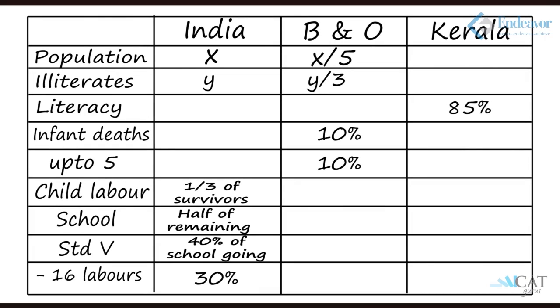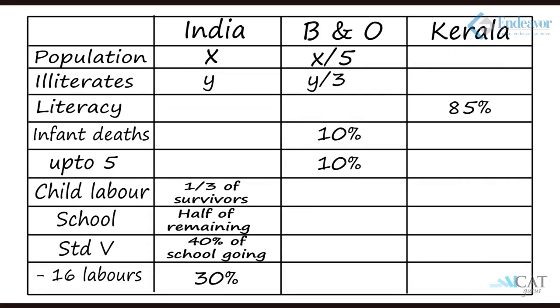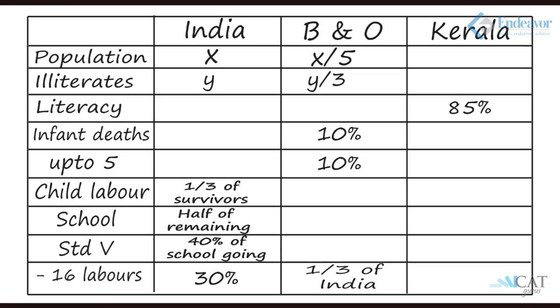In India, 30% of children under 16 work as labourers, so another row for under-16 labour with 30% in the India column. Orissa and Bihar contain one third of the child labourers in India, so we put that in the Orissa/Bihar column. India has the largest population of child labourers, which is one-fifteenth of its total population — another row added.